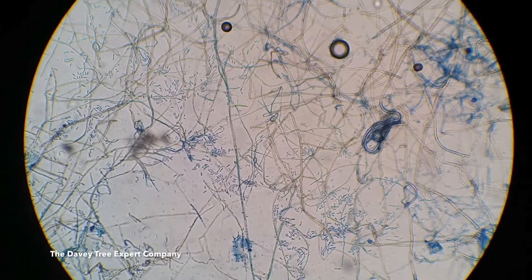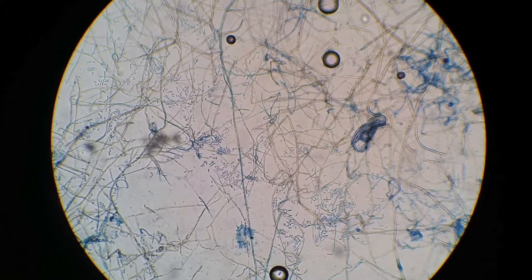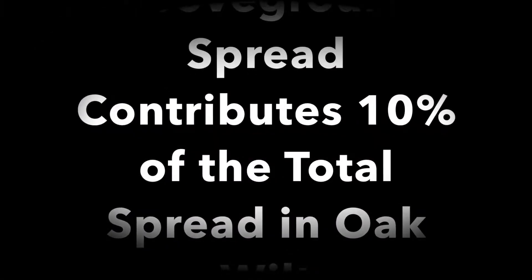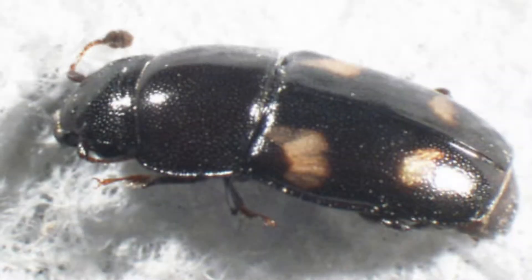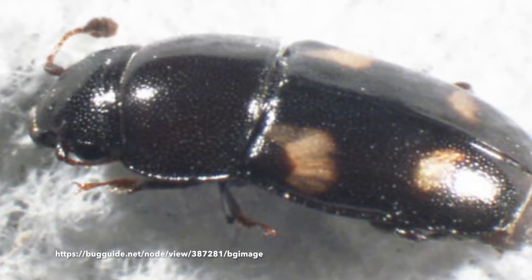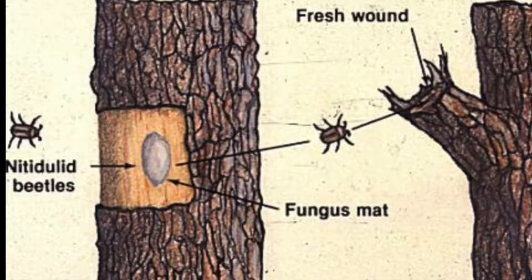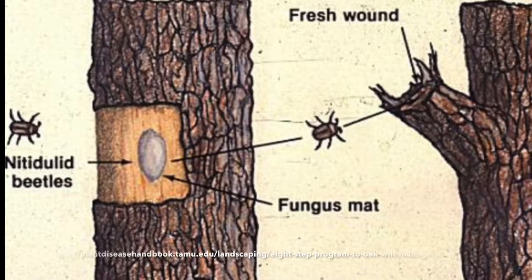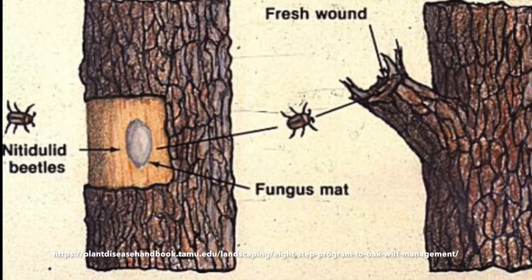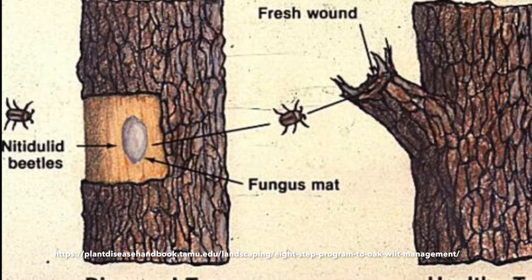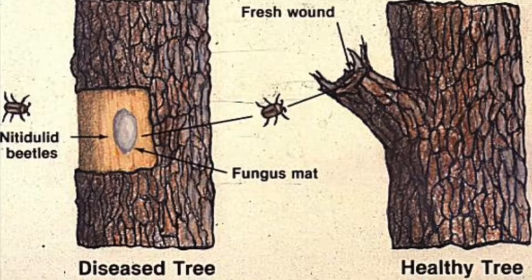The pathogen spreads from diseased to healthy trees by transmission of above ground and underground factors. Above ground spread consists of 10 percent of the total spread in oak wilt. The main route of above ground spread involves sap feeding beetles and the oak bark beetle. These beetles are attracted by the chemicals transmitted from the fungal mats underneath the bark. Once the beetles are in the mat, they pick up the fungal spores and carry them to other places. Freshly wounded trees also attract these beetles from the smell of the fresh sap.